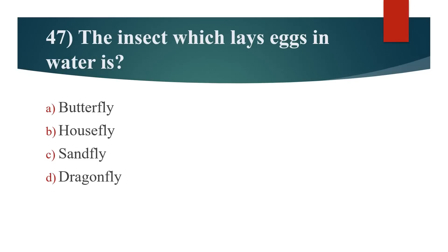47th question: The insect which lays eggs in water is? Option A: Butterfly. Option B: Housefly. Option C: Sandfly. Option D: Dragonfly. Answer is Option D: Dragonfly.